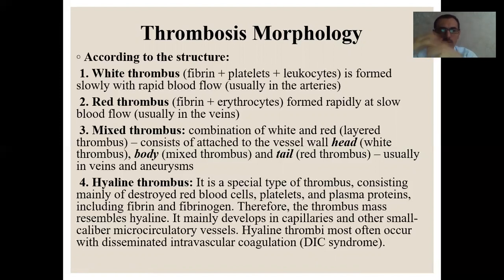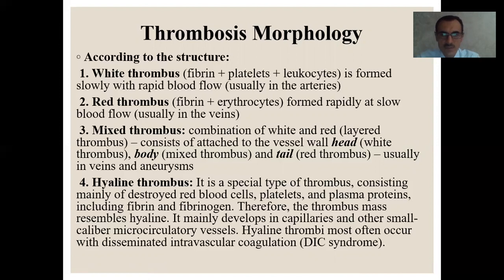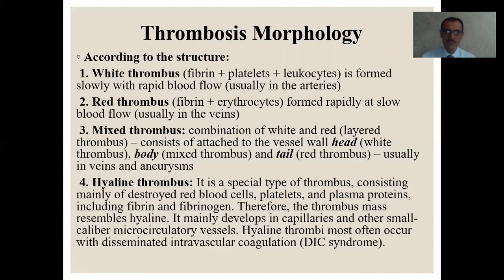The white thrombus forms the head, the body is the mixed thrombus, and the tail is the red thrombus. There is also a special type — the hyaline thrombus — which consists of fibrin and plasma proteins, similar to a thrombus mass. It most often occurs with DIC — disseminated intravascular coagulation syndrome.